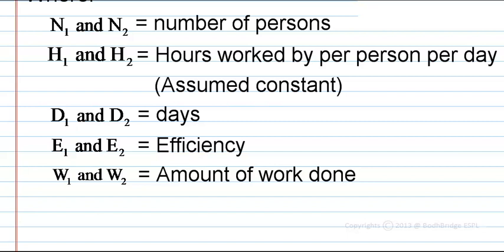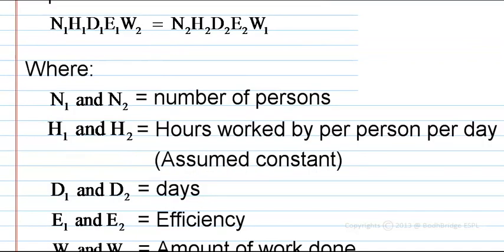E1 and E2 represent efficiency. For example, when it is given that A is thrice as efficient as B, that is the efficiency value. W1 and W2 is the amount of work done. This is the important formula.